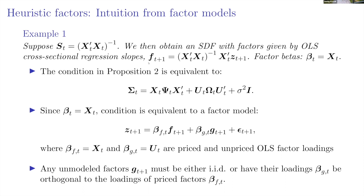In the context of a factor model: stock returns Z have factors F whose betas are given by characteristics X, but there are also potentially unpriced factors G that we miss. We achieve mean-variance efficiency only if we include these G factors within our factor set, or if the betas with respect to G are orthogonal to the betas with respect to the observed factors. If they're correlated, we inadvertently load on unpriced factors, blowing up variance and losing efficiency because our portfolio isn't fully diversified.